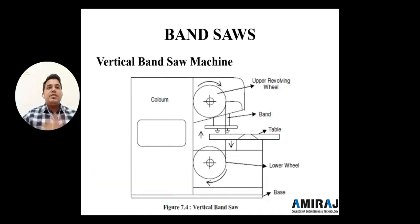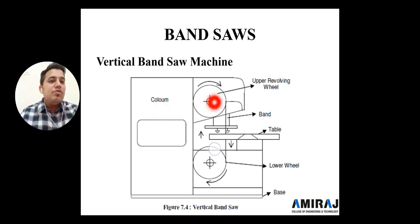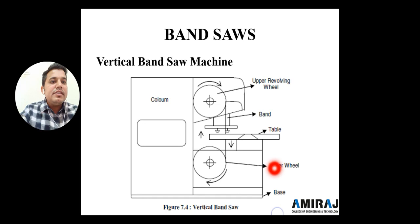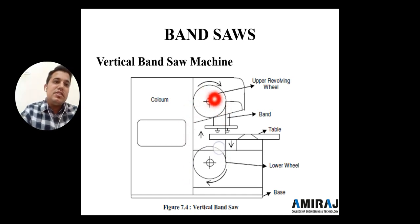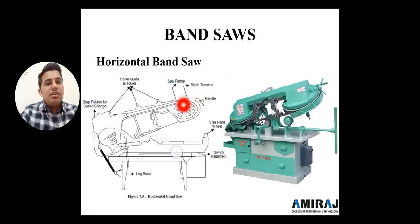The band saw is also divided into specific categories. First is the vertical band saw machine. You should draw this figure if asked in detail in the exam. The column is there, with one upper revolving wheel and one lower revolving wheel. The table and blade band are there with a base. The blade rotates clockwise or anti-clockwise depending on the operations and teeth orientation.